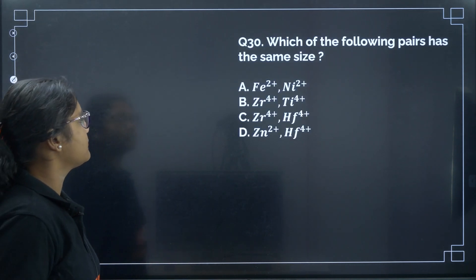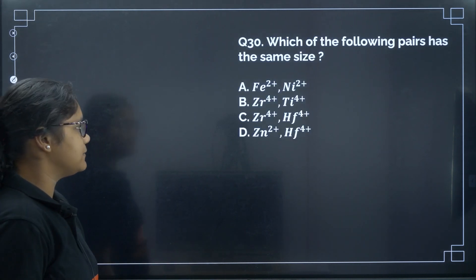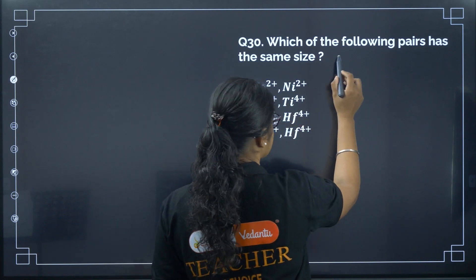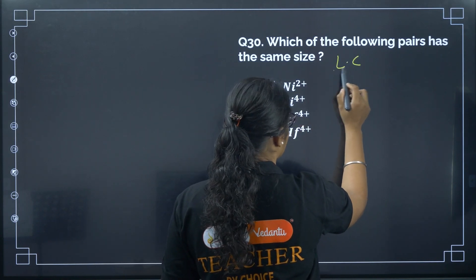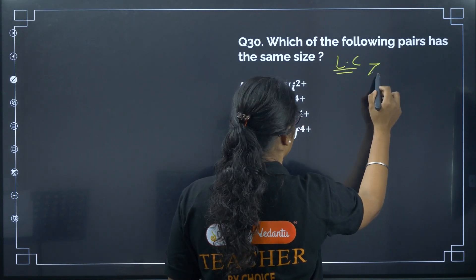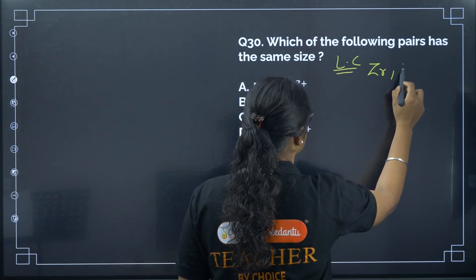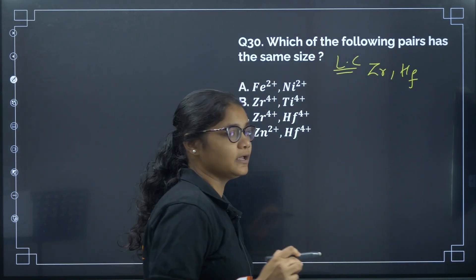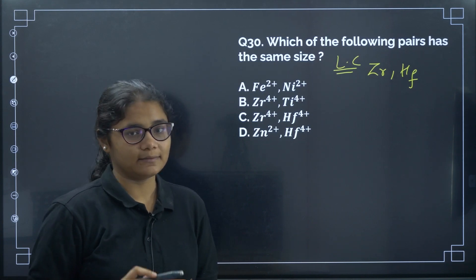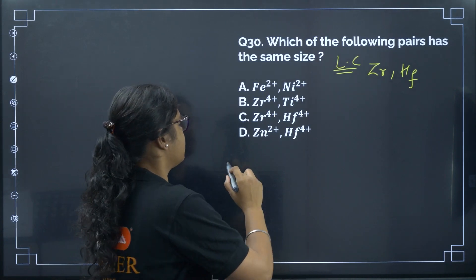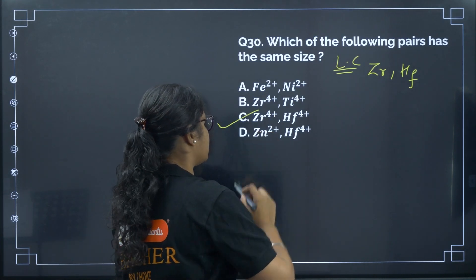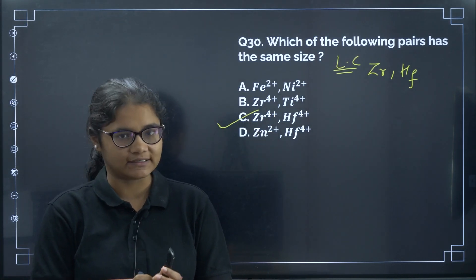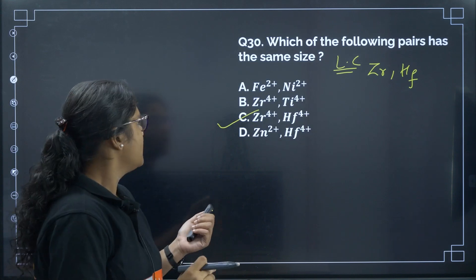Question 30: Which of the following pairs has the same size? This is an important consequence of lanthanide contraction. Zirconium and hafnium have the same size. The correct answer is option C.